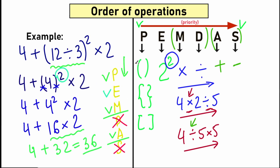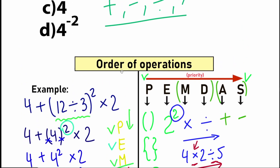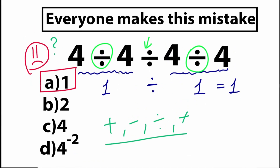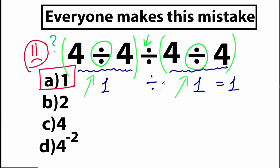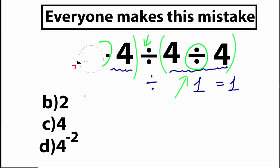That was a quick solution using PEMDAS. Now let's move back to our original question. Note that the correct answer would be 1 if we had parentheses — like (4÷4) ÷ (4÷4) — because with parentheses you evaluate each group first and then divide. But in our case we don't have parentheses.